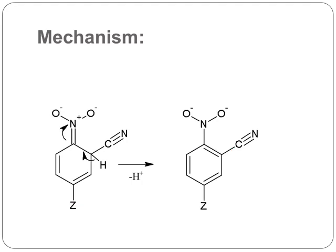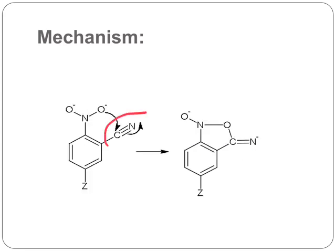Once aromaticity is restored, the next step is attack of the negatively charged oxygen atom on the electrophilic carbon of the cyanide group. The driving force is the negative charge on oxygen, which attacks the carbon atom, leading to formation of a five-membered heterocyclic ring. There is then a negative charge on the other oxygen and a negative charge on the nitrogen atom.